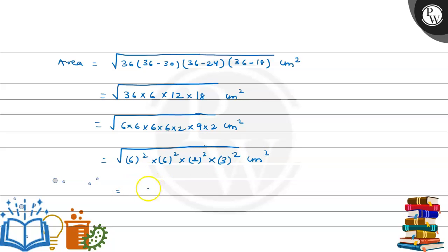The square root cancels the squares, giving 6×6×2×3 = 216 cm². Therefore, the area is 216 cm².